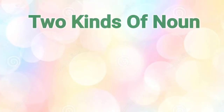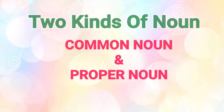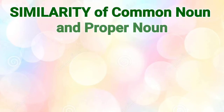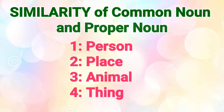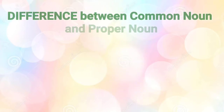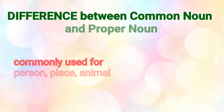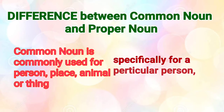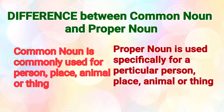Hello children, today I will teach you about two kinds of noun. Noun is divided into many parts, but today I will teach you about common noun and proper noun. The similarity between common noun and proper noun is that they are used for person, place, animal, or thing. The difference is that common noun is commonly used for any person, place, animal, or thing, whereas proper noun is specifically used for a particular person, place, animal, or thing.